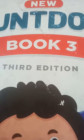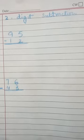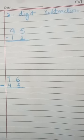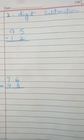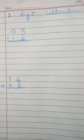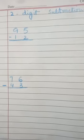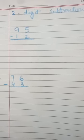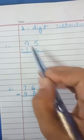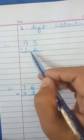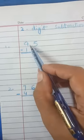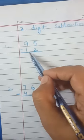Let's start our work. Students, I have prepared a page for you — 2-digit subtraction — and I have written 2 sums here. I am going to solve them in front of you, so watch carefully. Here we have question number 1: 9, 5, 1, 2 — it means 95 minus 12.